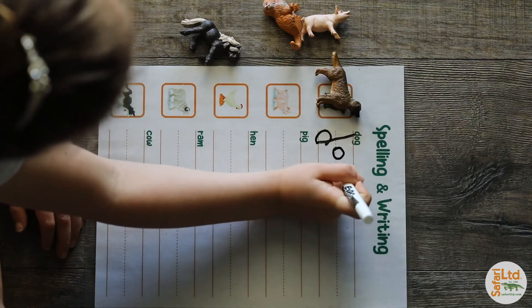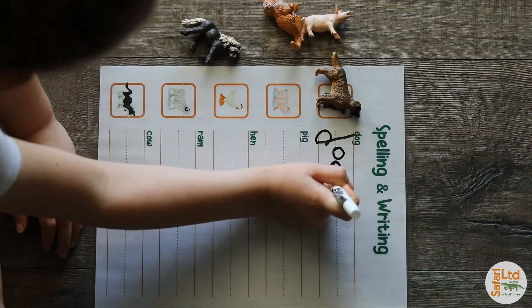The sheet starts with simple CVC or consonant-vowel-consonant words.